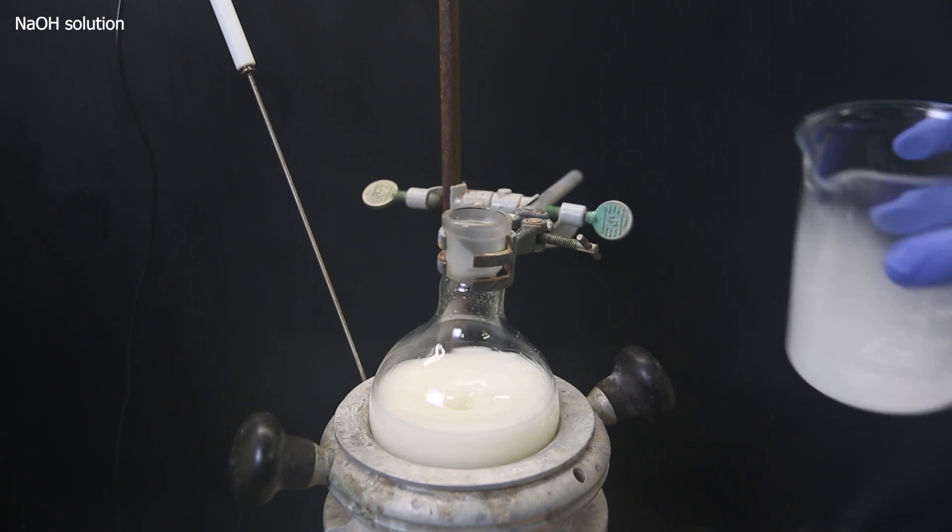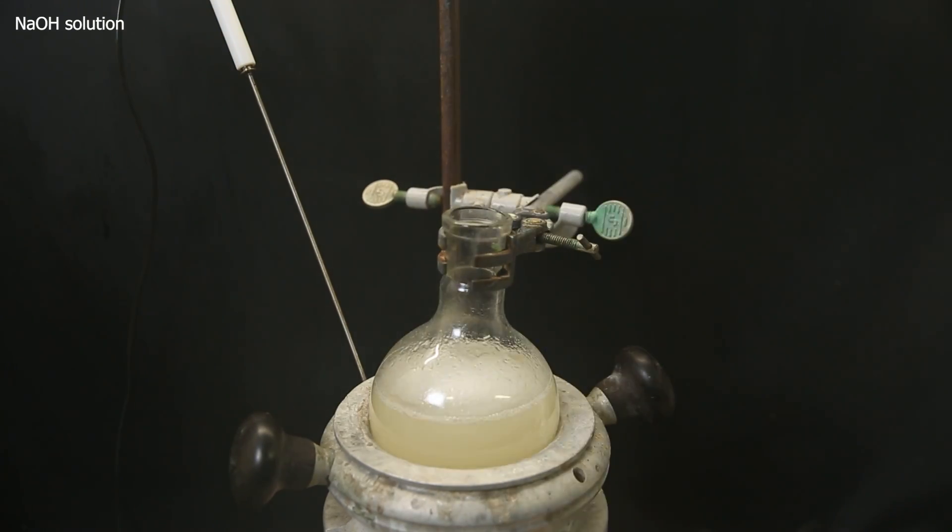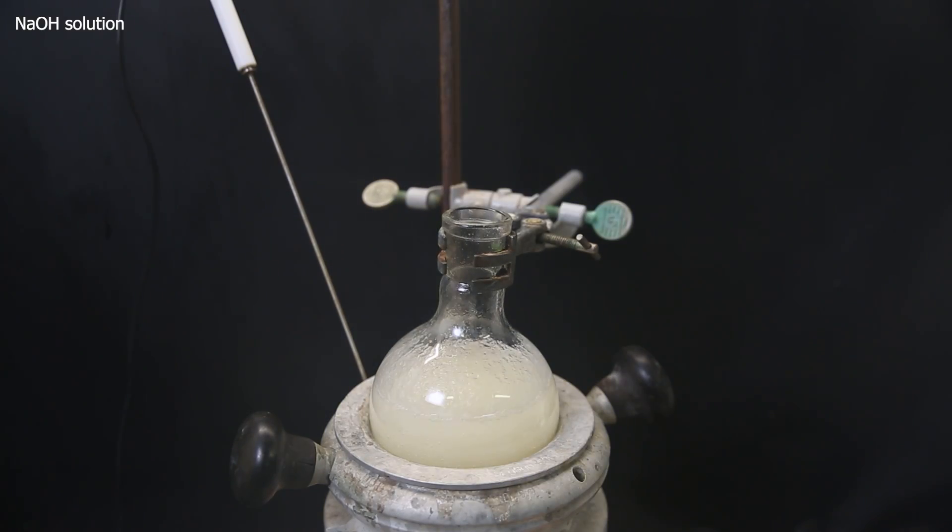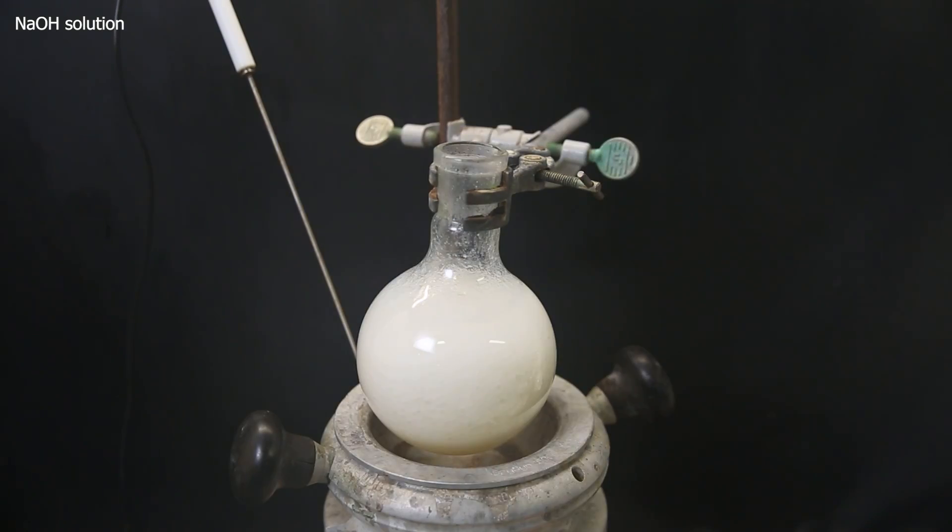I add this solution gradually to the mixture to destroy all the acid. It first turns yellow and then becomes cloudy again. I keep adding more sodium hydroxide solution until there is no more exotherm upon addition, signaling that all the acid is gone.